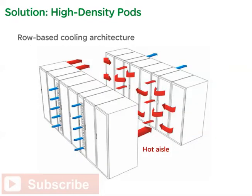Row-based cooling is an air distribution approach in which the air conditioners are dedicated to a specific row of racks. This is in stark contrast with room-based cooling, where perimeter air conditioners are dedicated to the entire room. Row-based air conditioners may be installed above IT racks, adjacent to IT racks, or in combination.